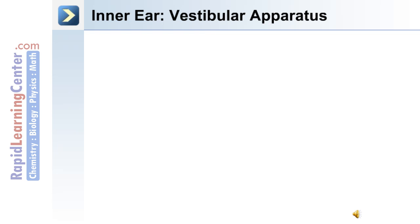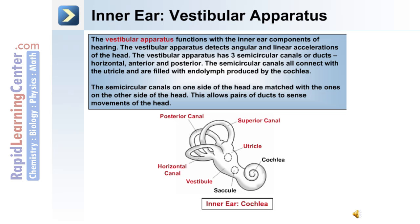Also in the inner ear is the vestibular apparatus, made up of three canals: the superior canal, posterior canal, and horizontal canal. The vestibular apparatus functions with the inner ear components and detects angular and linear accelerations of the head. These three semicircular canals are filled with endolymph and are connected with the utricle. The semicircular canals on one side of the head are matched with those on the opposite side, allowing pairs of ducts to sense movements of the head.